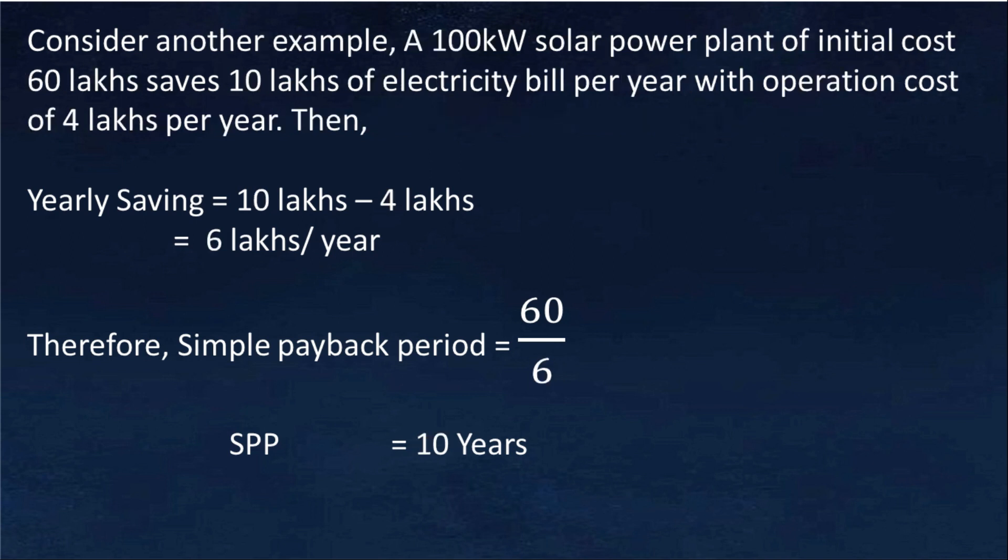Consider another example. A 100 kilowatt solar power plant of initial cost 60 lakhs saves 10 lakhs of electricity bill per year with an operation cost of 4 lakhs per year. Then SPP will be 60 lakhs divided by 10 minus 4, which is equal to 10 years.